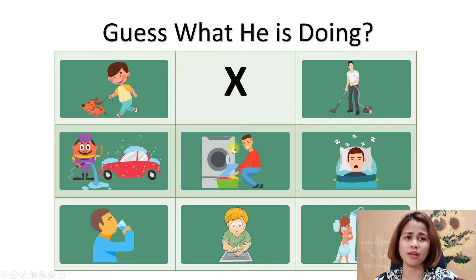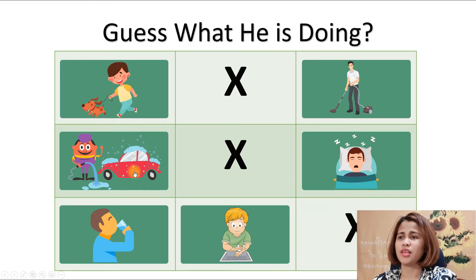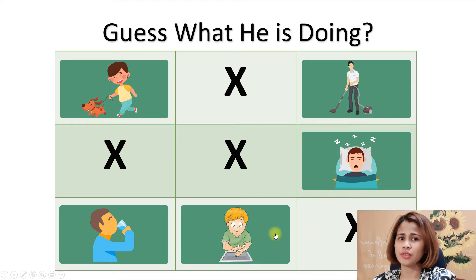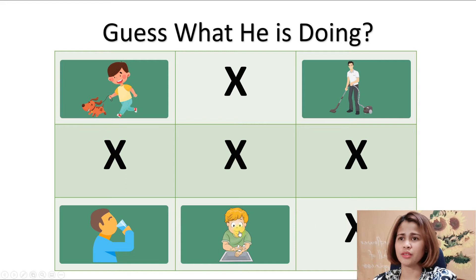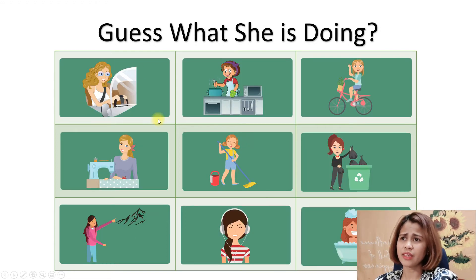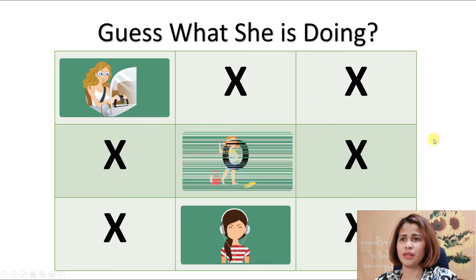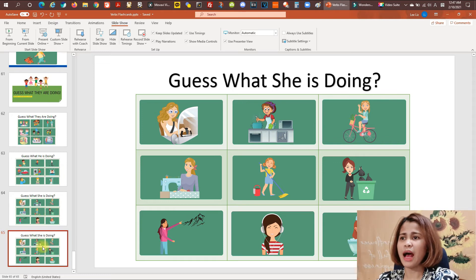You can also use negative sentences like 'He is not jumping,' or ask questions like 'Is he doing the laundry?' — No, he is not. 'Is he taking a shower?' — No, he is not. 'Is he washing the car?' — No. 'Is he sleeping?' — No. 'Is he washing his hands?' — Yes! You can use different types of sentences: affirmative, negative, or questions. The same applies for 'she' — for example, 'She is taking out the trash.'